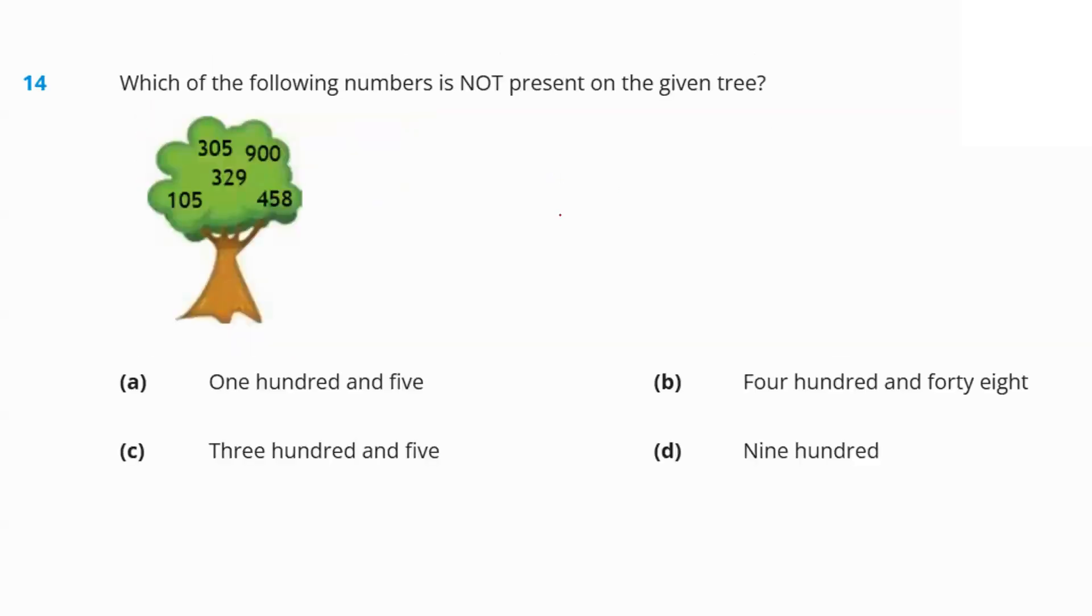Which of the following numbers is not present on the tree? What's the first number? One hundred and five. Present on the tree? Yes. Four hundred and forty-eight. Is it anywhere on the tree? No. Hence, this is the missing number. Three hundred and five. Again, it's here. Nine hundred is here. So, option B is the answer. That's not present on the tree.